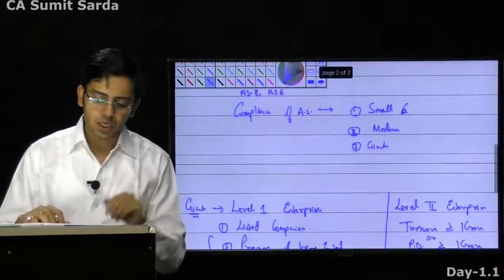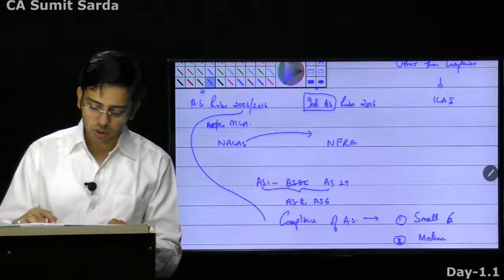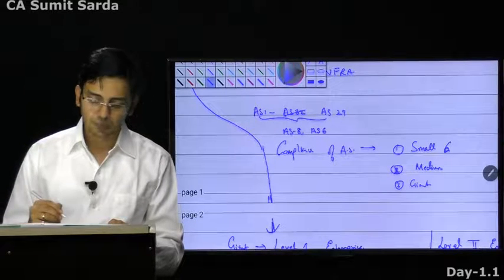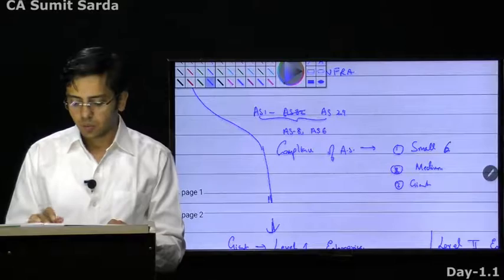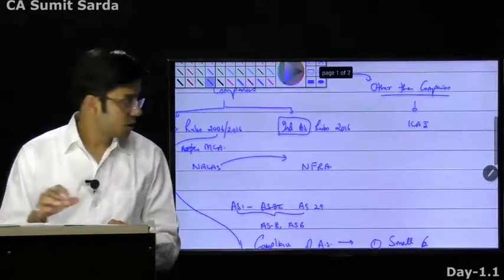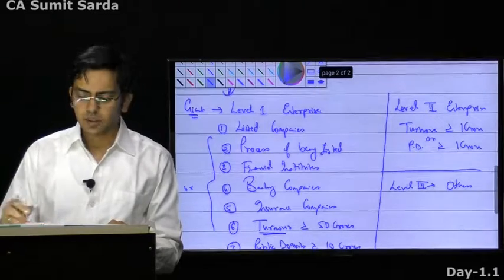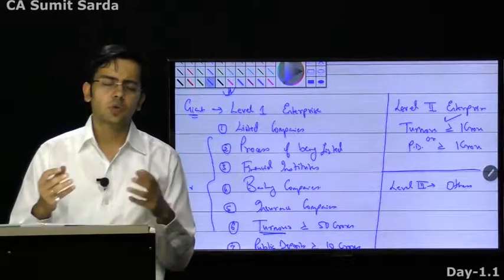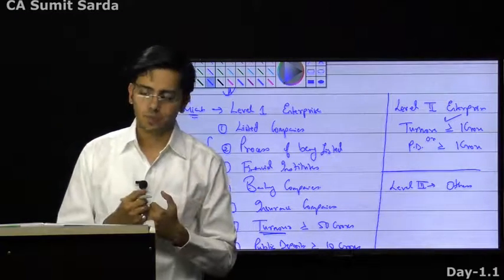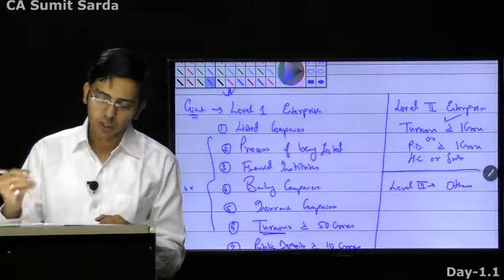So whenever I talk about Level 1, we are talking majorly about companies, and in the case of companies, we need to follow Companies Accounting Standard Rules 2006. For other than companies, they generally fall under the other two categories based on whether their turnover or public deposit is more or less than 1 crore. They also have the same holding/subsidiary condition.